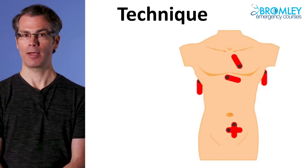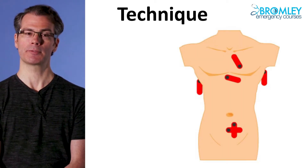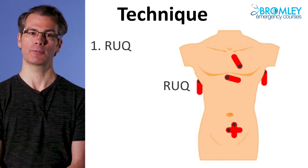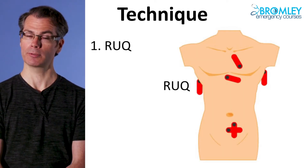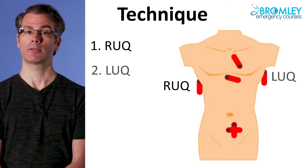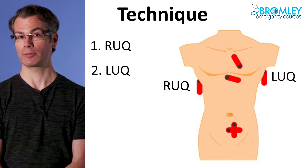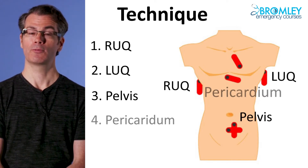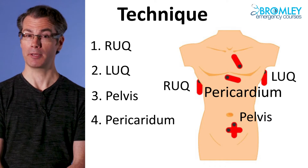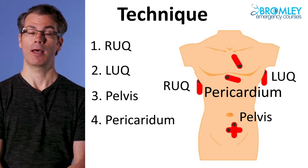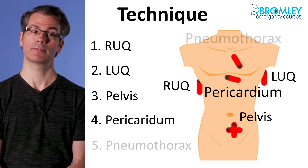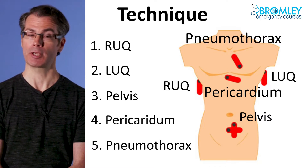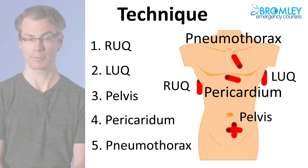There are five regions we assess. First, the right upper quadrant. Second, the left upper quadrant. Third, the pelvis. Fourth, the pericardium. And finally, the anterior chest for pneumothorax.